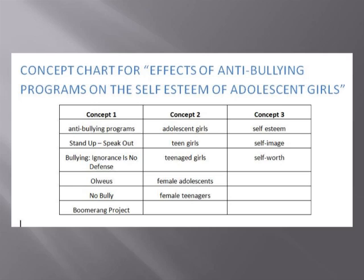Under Anti-Bullying Programs, the synonyms and related terms are a list of specific anti-bullying programs. Maybe an author wrote about the Boomerang Project but never said the actual phrase 'anti-bullying program' — you don't want to miss that article. Under Adolescent Girls, there are different ways to say the same thing: Teen Girls, Female Teenagers, Adolescent Females, and so forth. Under Self-Esteem, there are Self-Image and Self-Worth, which aren't quite the same but are very similar. So there are three ways to come up with synonyms and related terms: one, actual synonyms and near synonyms like girl and female; two, related but not exactly the same ideas like self-esteem and self-image; and three, specific cases like Boomerang Project, which is one example of an anti-bullying program.